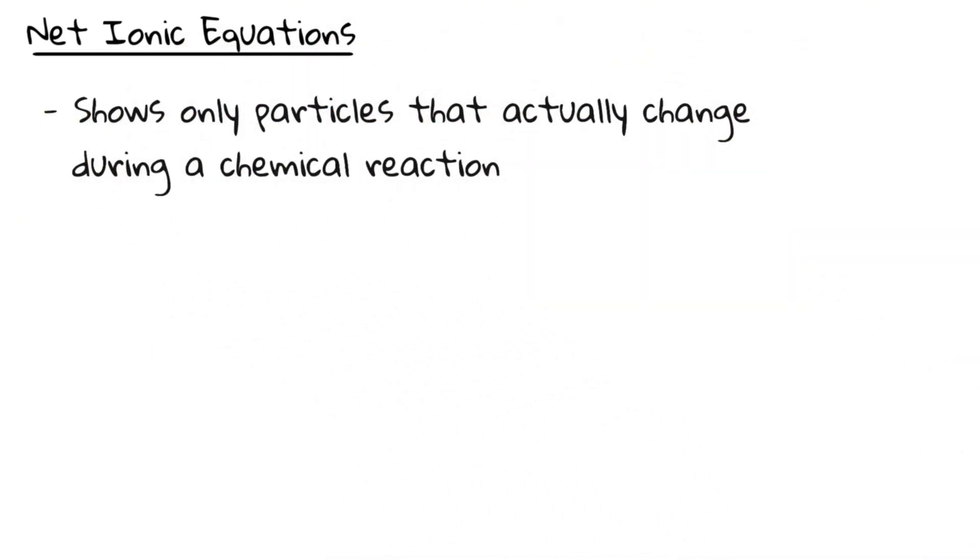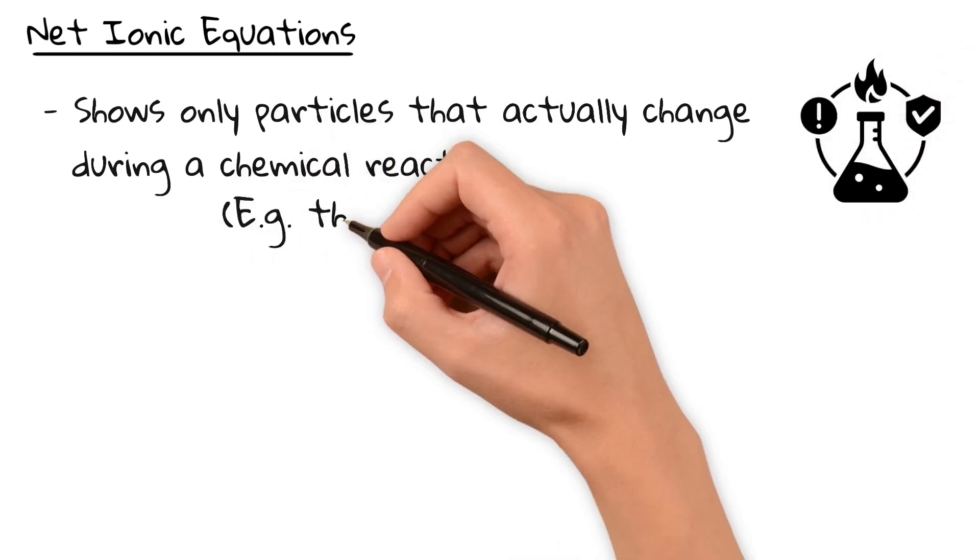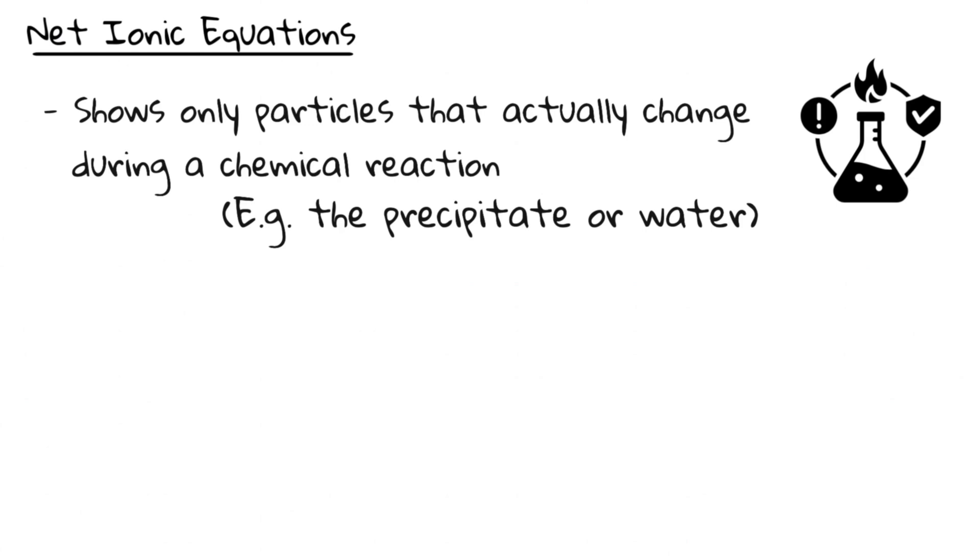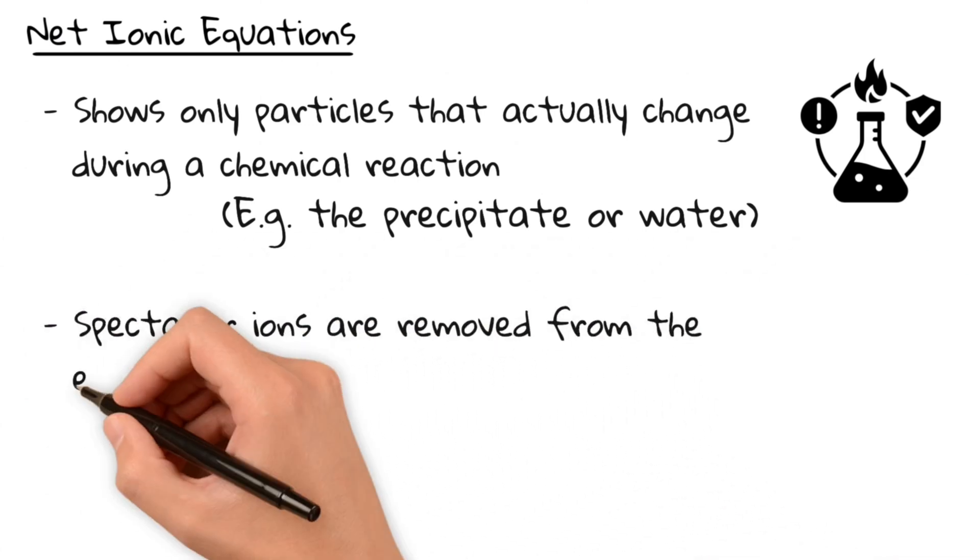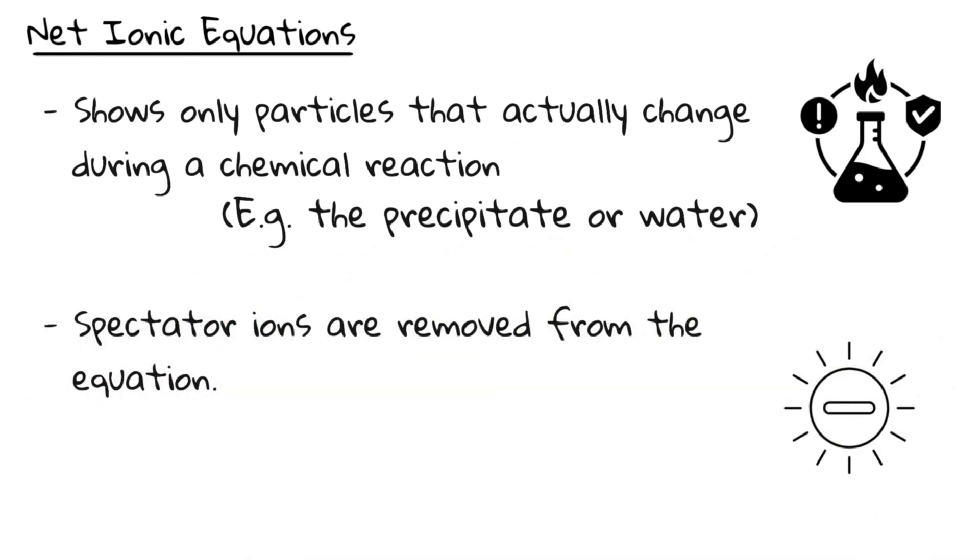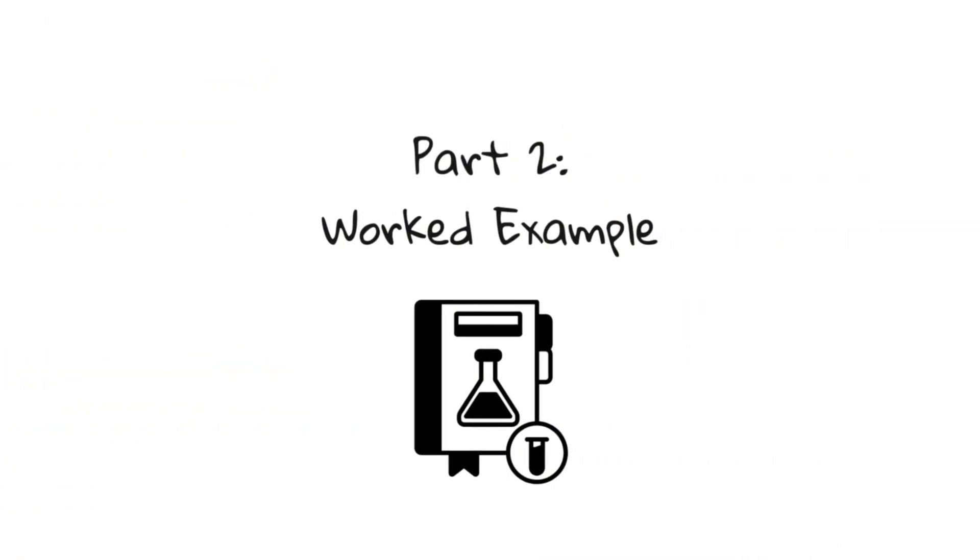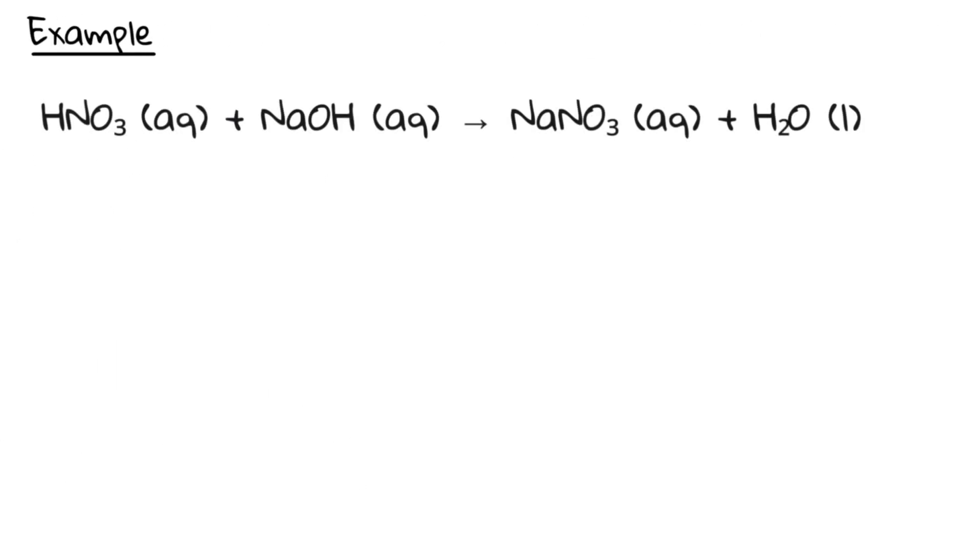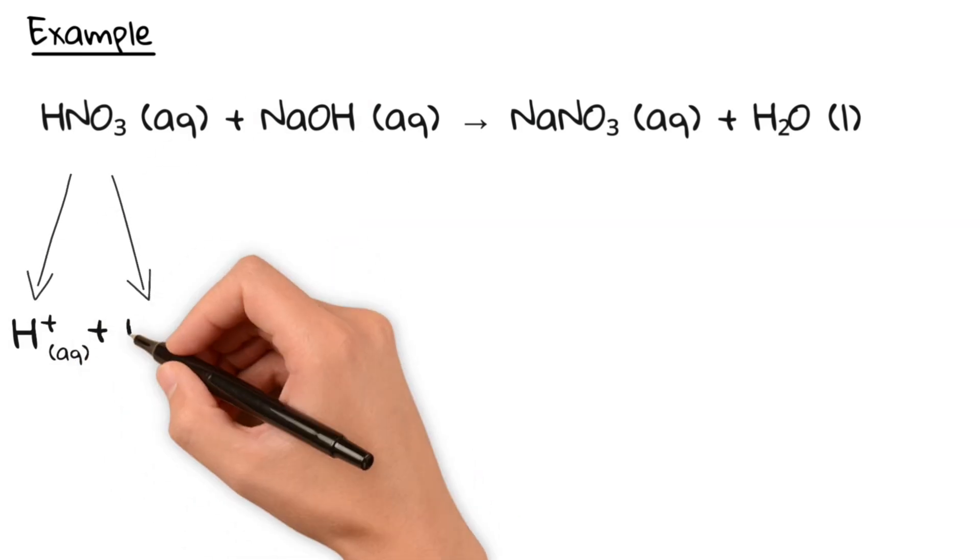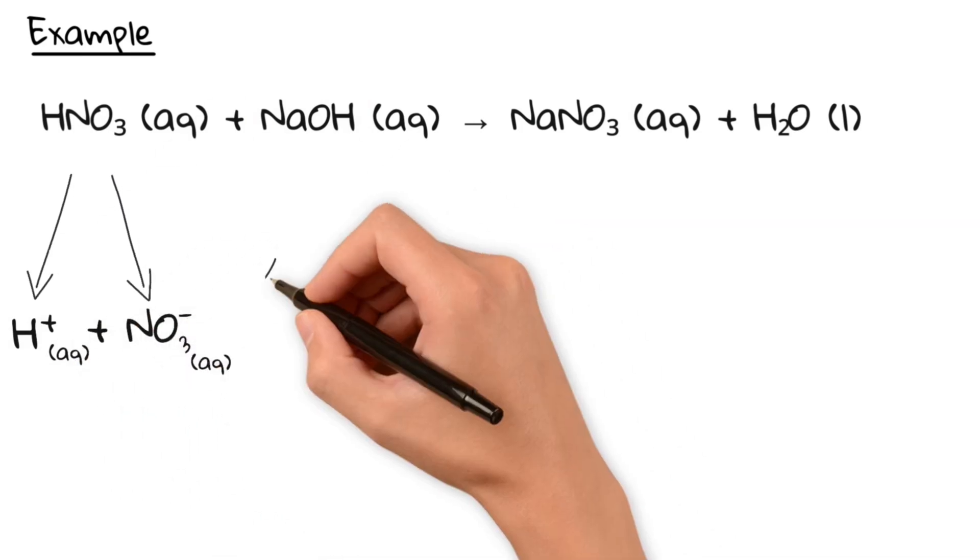A net ionic equation shows only the particles that actually change during a chemical reaction. That means the ones involved in the formation of a product like a precipitate or water. Spectator ions, that means the ions that are just floating around and don't do anything in the actual reaction, are cut out. Let's go through an example, so it all makes sense.